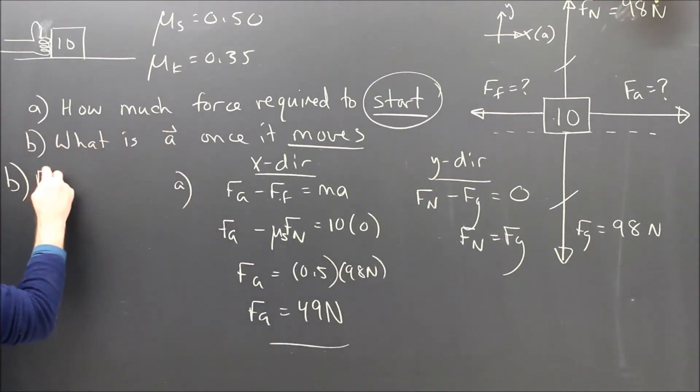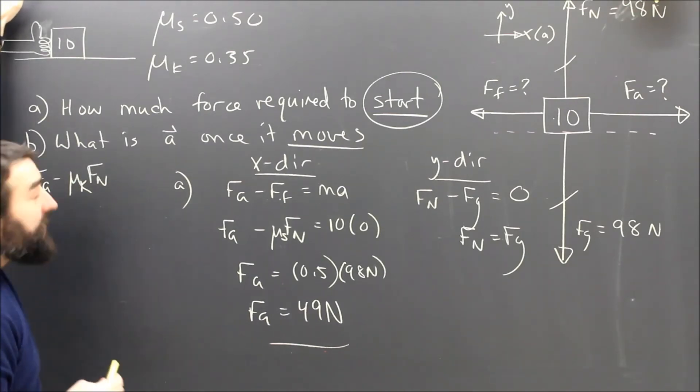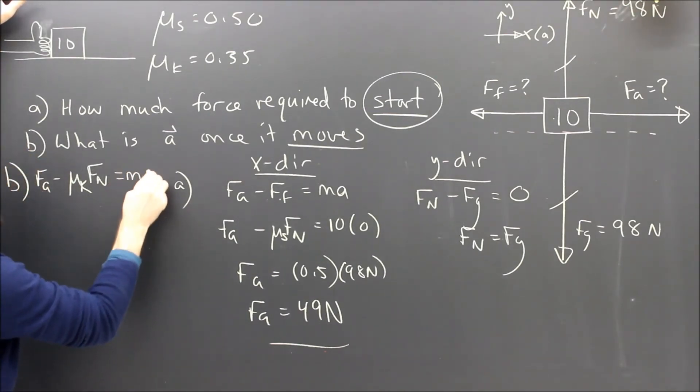So now that it's moving, Fa minus μ Fn, but now that it's moving, it's μk, it's mu-ving. Now that it's moving, it's μk, and that's going to equal Ma.